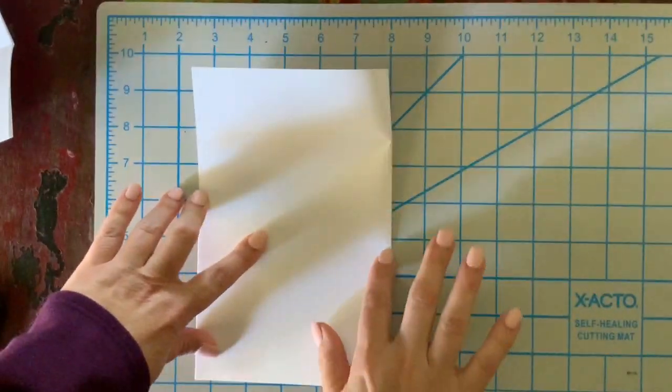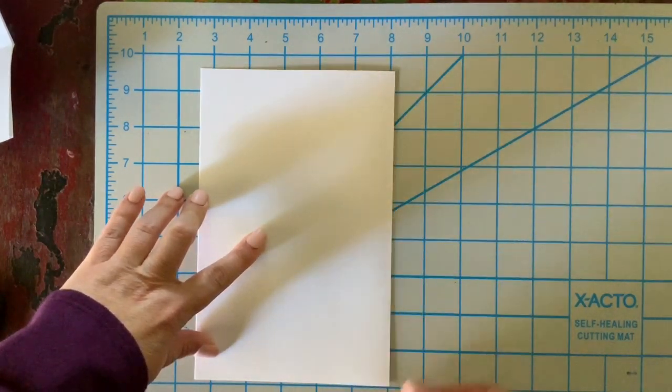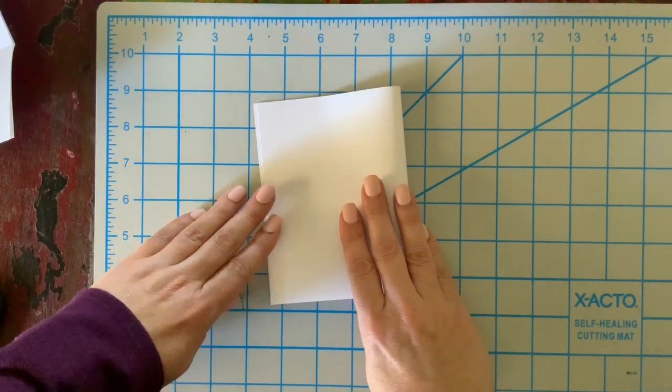The first thing you want to do is fold your paper in half. Make sure you use your finger or your nail to really make that crease strong.